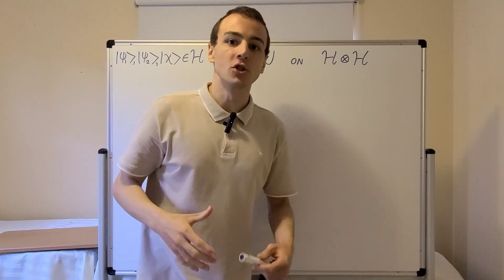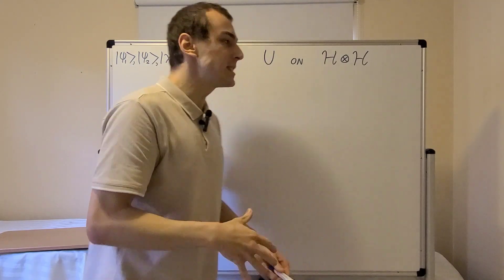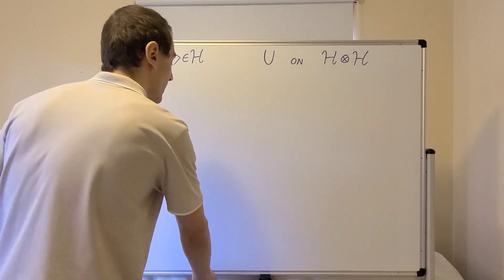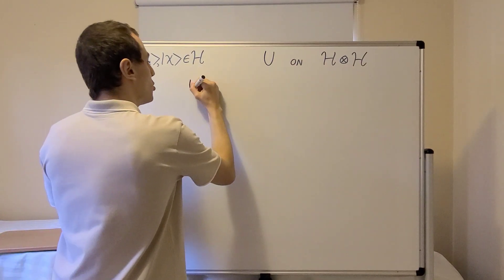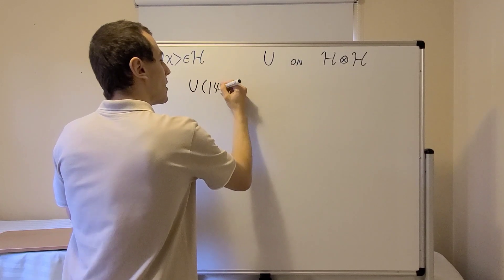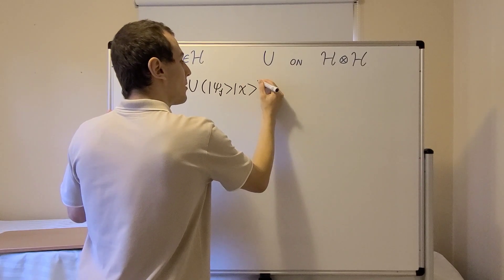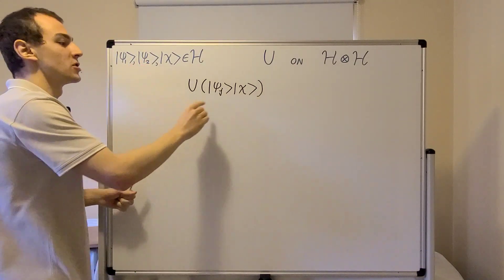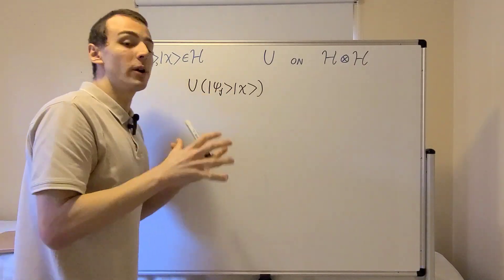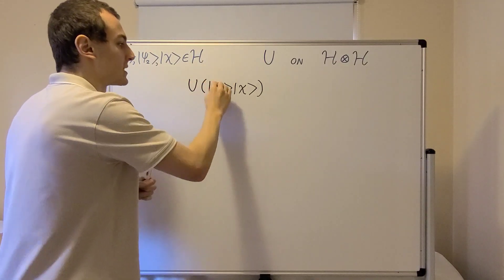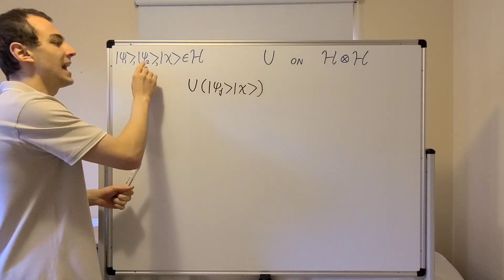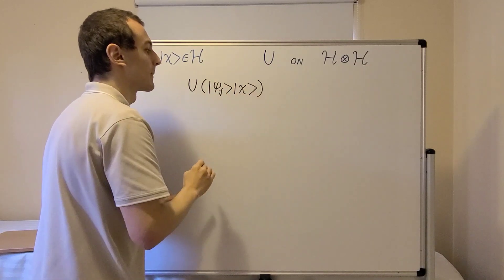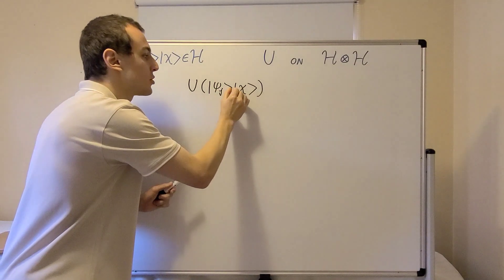Suppose that it is possible to clone a quantum state. What does that mean in terms of an equation? We'll use this unitary operator to write down an equation. Consider U acting on the state |ψⱼ⟩|χ⟩. Here j is a placeholder for 1 or 2, so this equation is valid for both ψ₁ and ψ₂. This χ is the same χ introduced earlier.